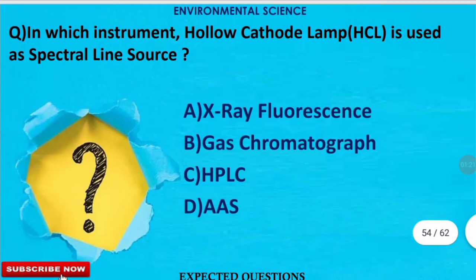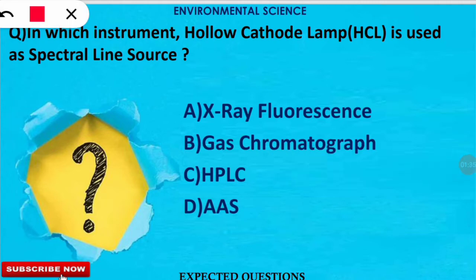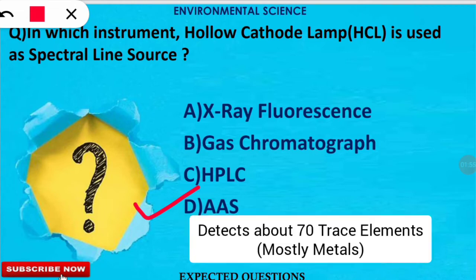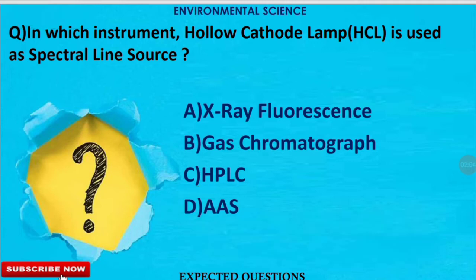The second question is: in which instrument is the hollow cathode lamp (HCL) used as a spectral line source? The correct option is D. In atomic absorption spectrophotometry, the hollow cathode lamp is used for optical radiation, which is absorbed by the free atoms of the elements being analyzed. Atomic absorption spectrophotometry is helpful for tracing elements — mostly metals — of around 70 categories.